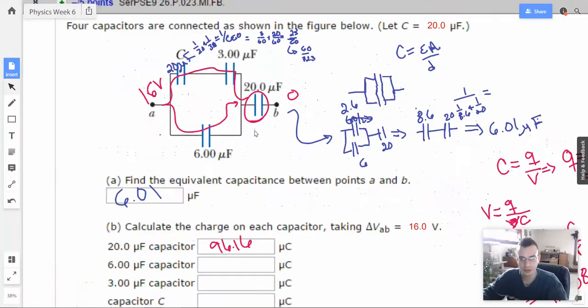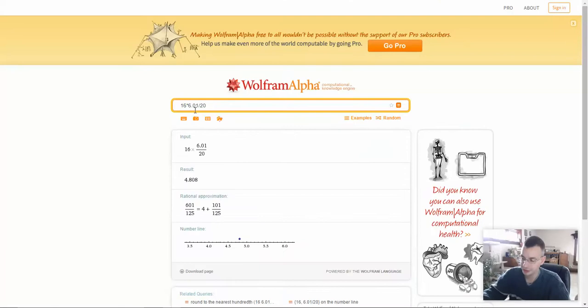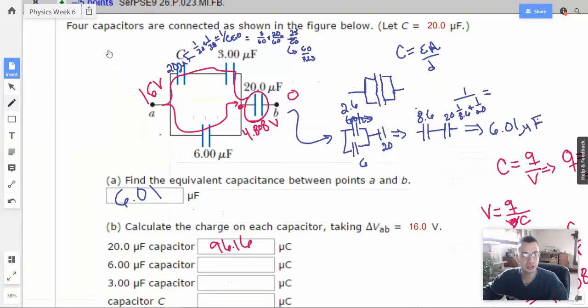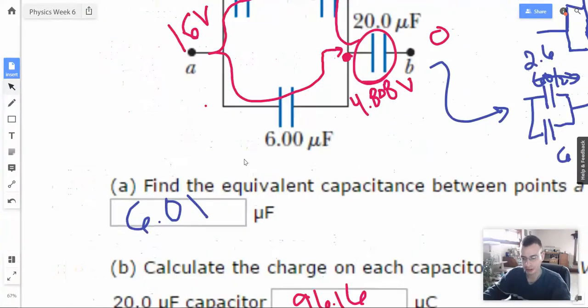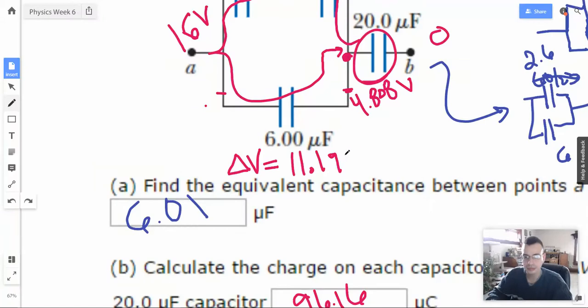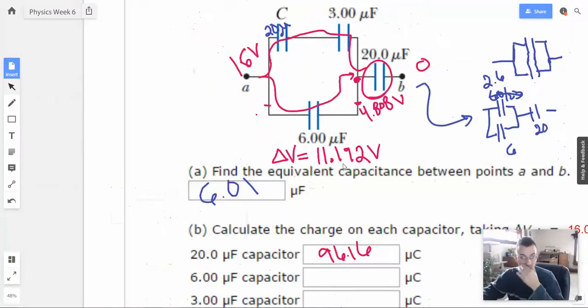So a voltage rise of 4.8 will give us 4.808 volts at this point right here. So the voltage difference will be 16 minus that, which will be 11.192. So if you're confused about where I'm going with this, the delta V between this point and this point will be 11.192 volts. So now we can find the charge on this guy, and then just say the charge is the same as on the other guy.